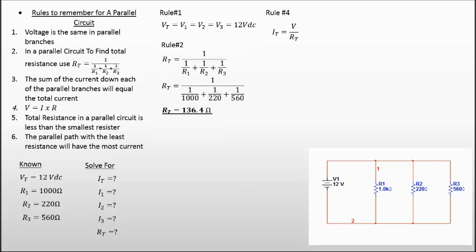Now let's look at rule number four, and we'll solve for the total current in the circuit. Now that we know R total and we know V total, we can figure out I total. So Ohm's law. All we did was use V equals I times R, and we manipulated the formula so that we could now solve for I. So I is going to equal your V over R. So I total is going to be your 12 volts DC divided by the 136.4 ohms, which gives us a total current in this circuit as 0.08798 amps.